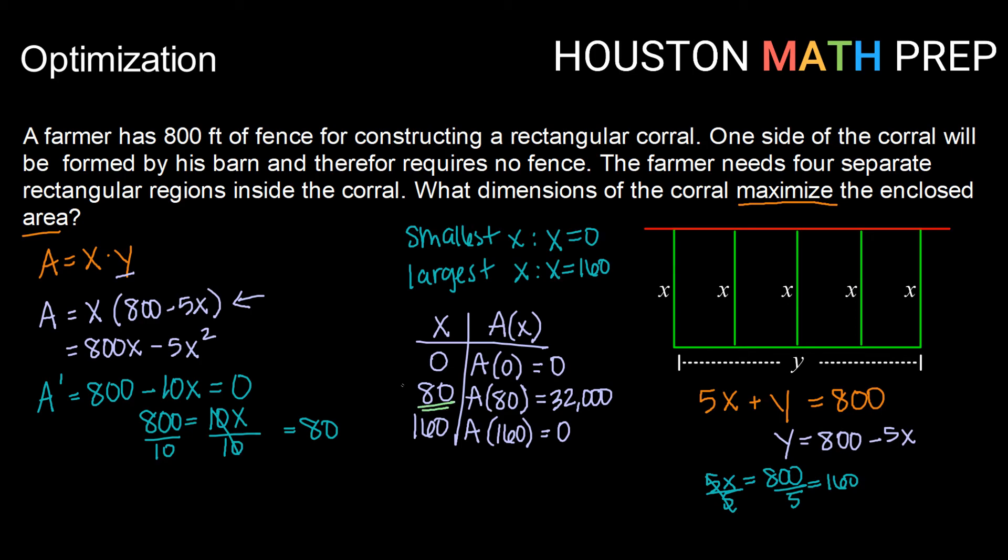Now we want to make sure that we answer the full question here. And that full question was, what are the dimensions of the corral? So we have our x dimension, x equals 80 feet. But we want to make sure we also give our y dimension. Well right here we have a formula for y in terms of x. So let's go ahead and solve that when x equals 80. So y will be equal to 800 minus 5 times 80 or 400 feet.